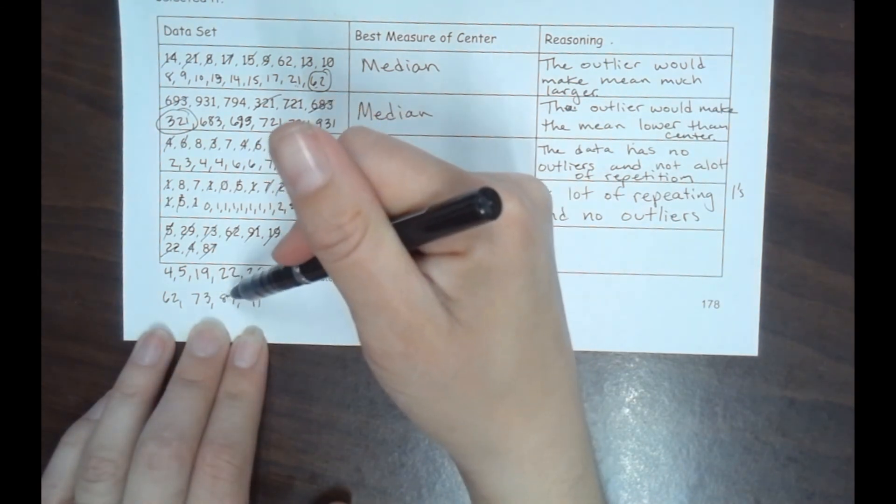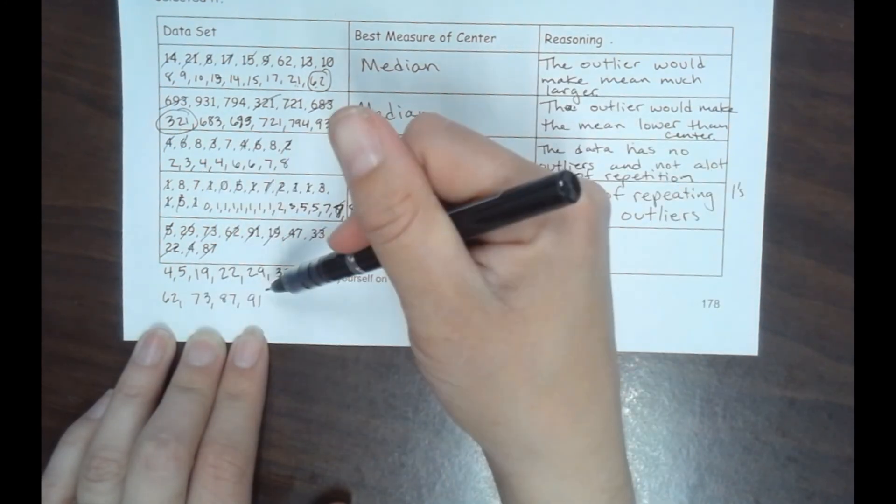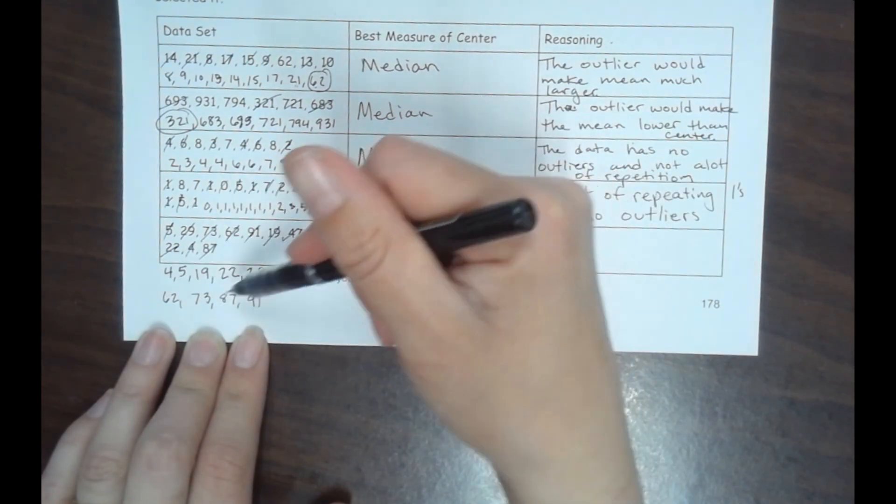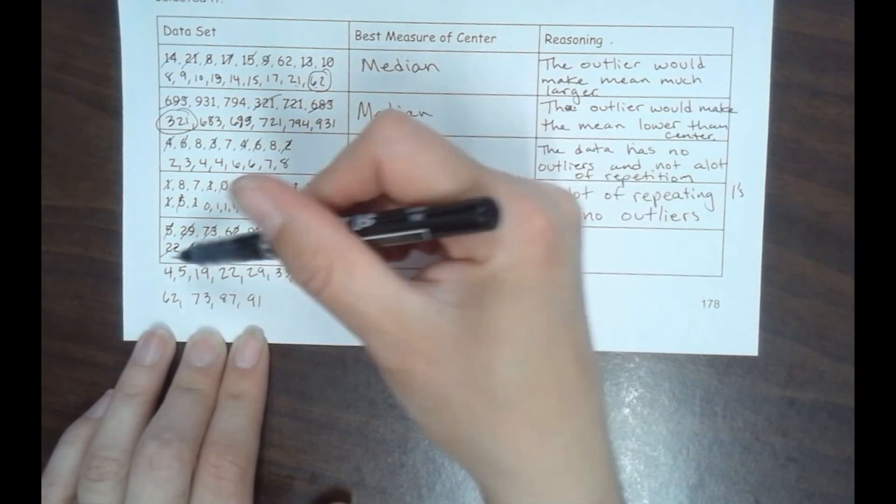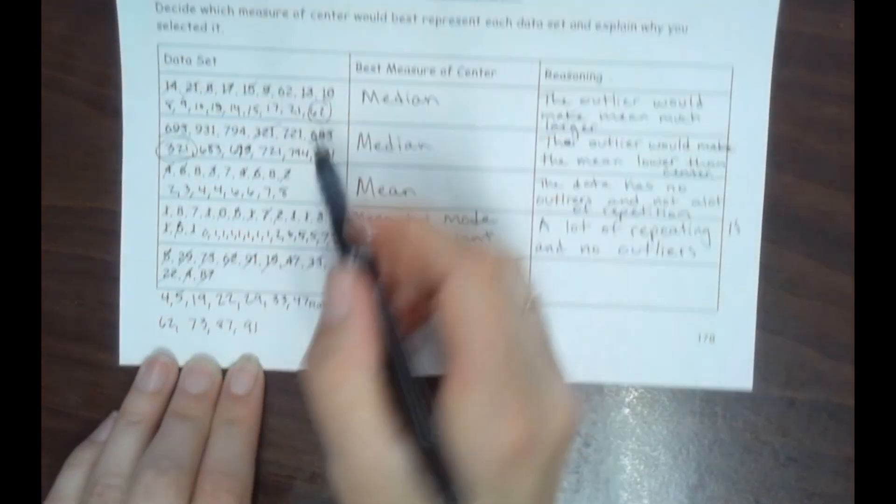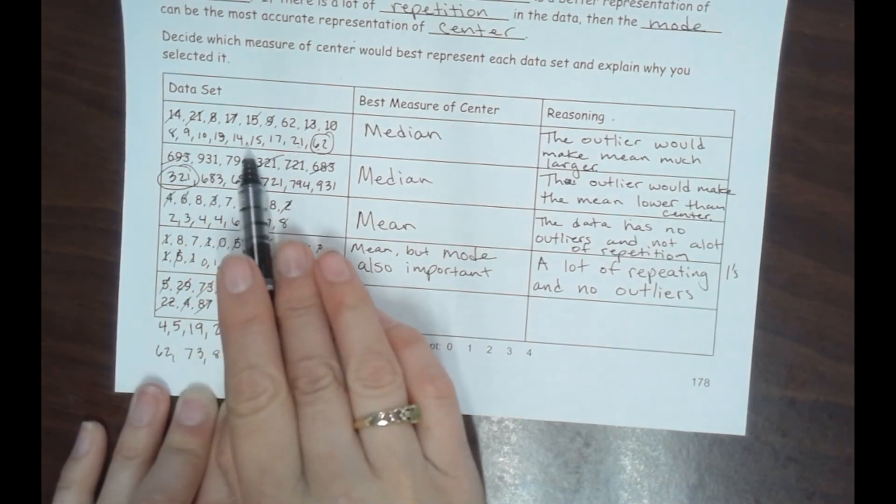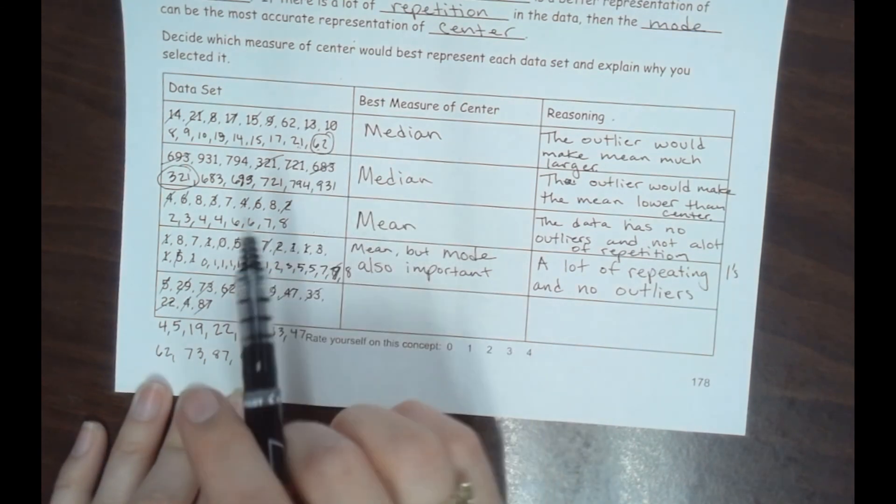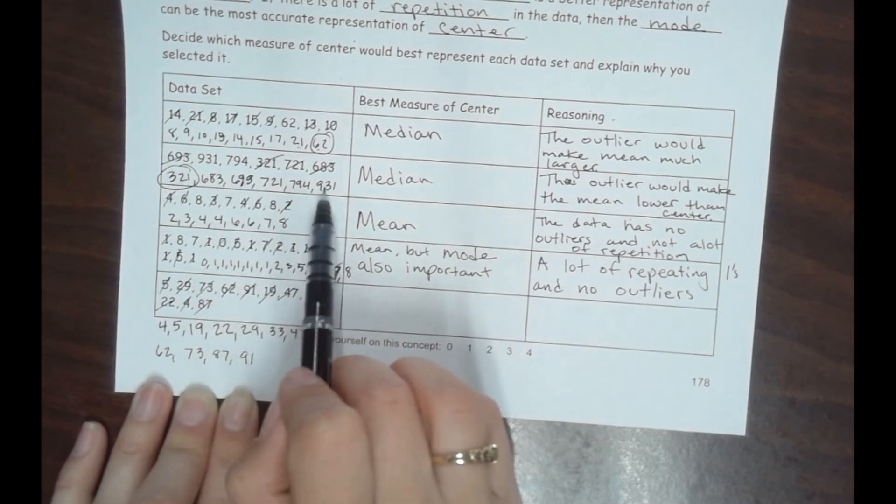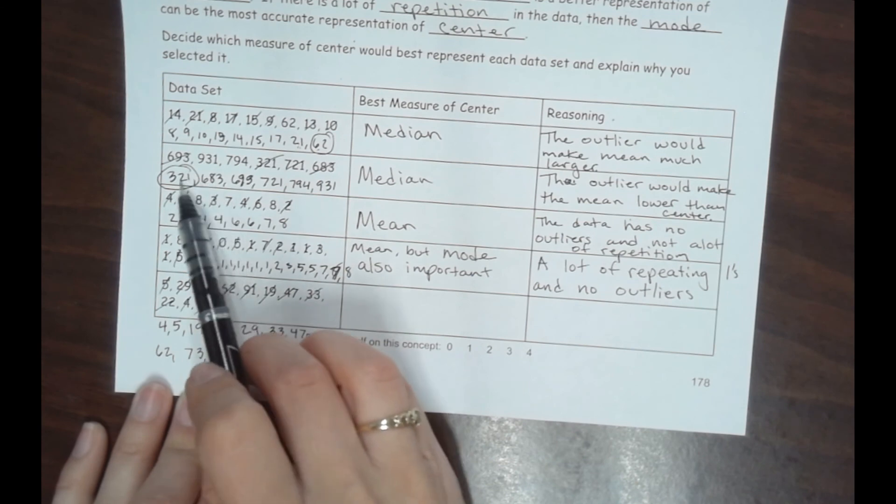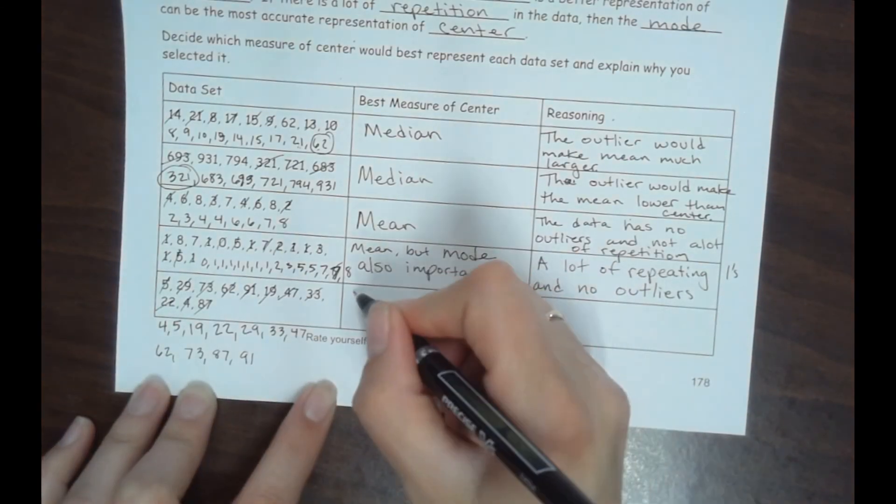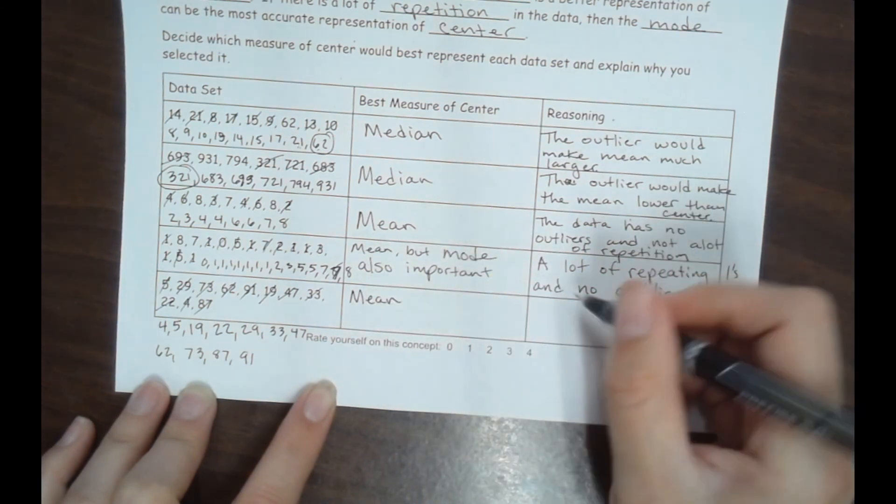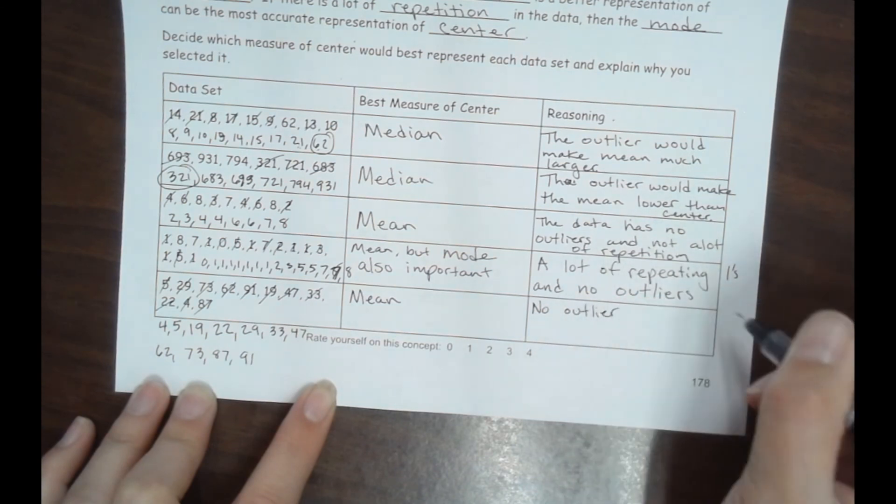All right, so looking at these numbers, it spans from 4 all the way up to 91, but from 91 to 87 is not very far. 87 to 73, these are more spaced out, but that doesn't mean that either of these are an outlier. 91 is not very far away from 87 or 73. 4 and 5 are not that far from 19 compared to the others. So these, because they're spaced farther apart but they're all fairly spaced apart, this means we don't have an outlier. These ones are all relatively, there's some jumps in there, but your highest value and lowest value aren't that crazy different from any of the others. So that would make this, the mean would be best. Okay, there's no outlier and no repetition.